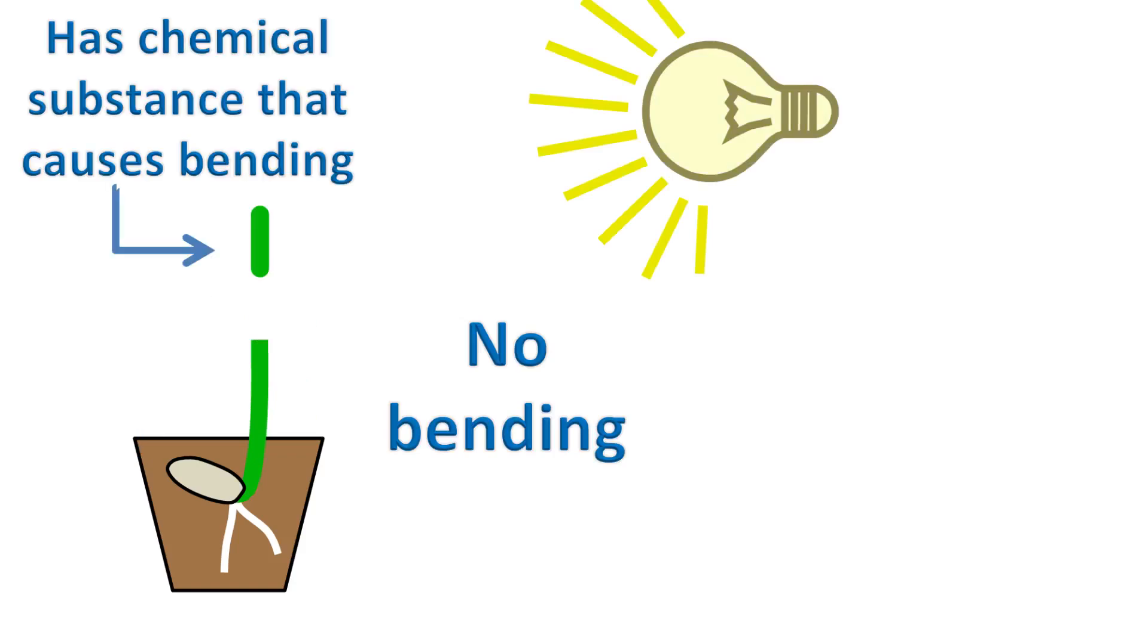So based on his observation, he concluded that there is a chemical substance in coleoptile that causes bending towards the light.